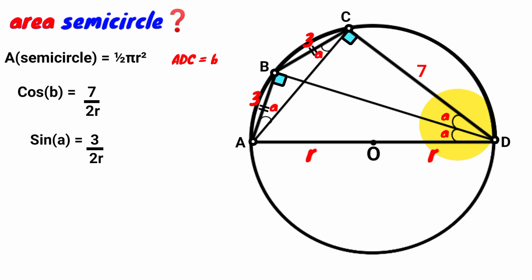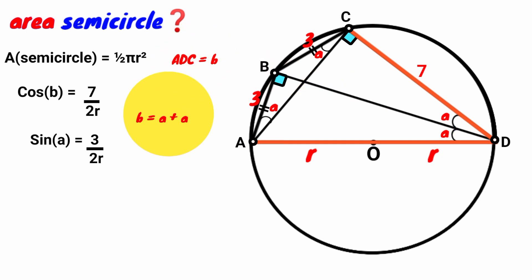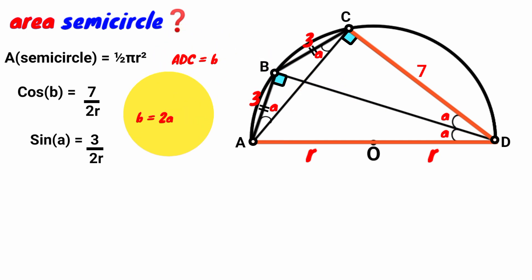Now the total size of angle ADC is the sum of this A and this A. We have its size to be B. So B = A + A = 2A. Coming back to the equation cos B = 7 over 2R, we replace B with 2A: cos 2A = 7 over 2R.